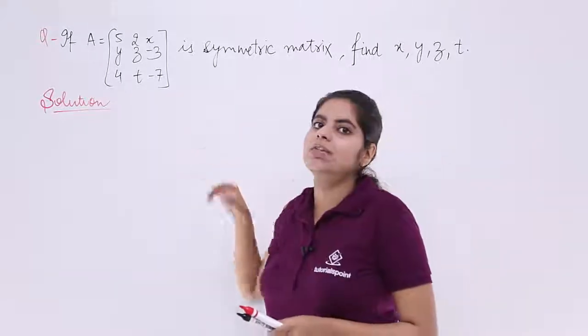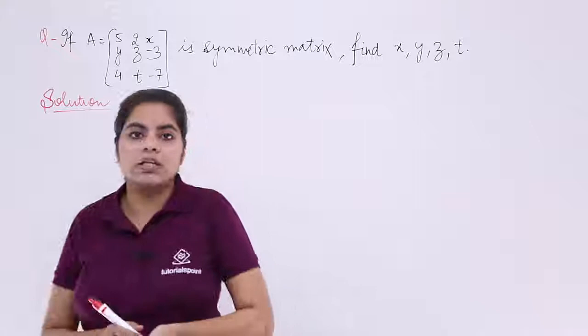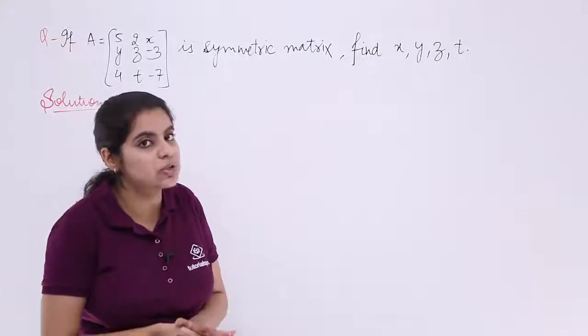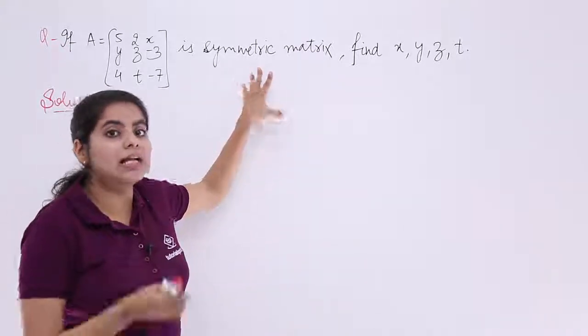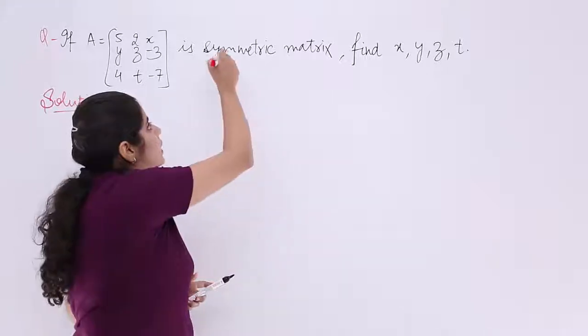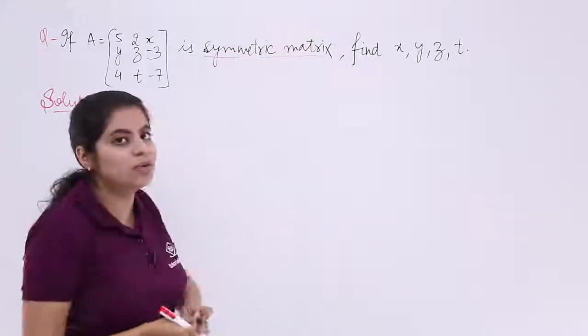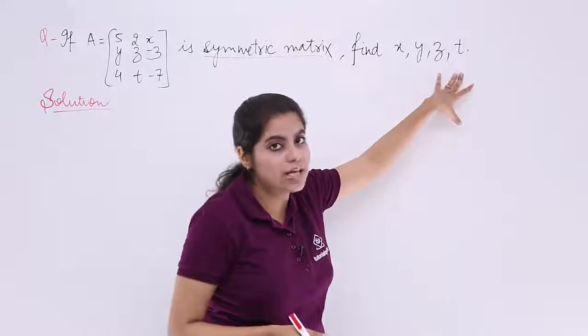The problem says if A is a given matrix of the order 3 by 3 because there are 3 rows and 3 columns and it is also known that it is already a symmetric matrix, then what do you need to find out? You need to find out the variable values x, y, z and t.